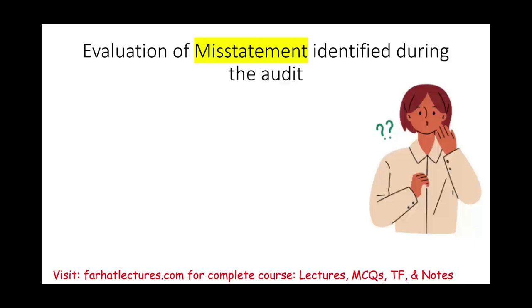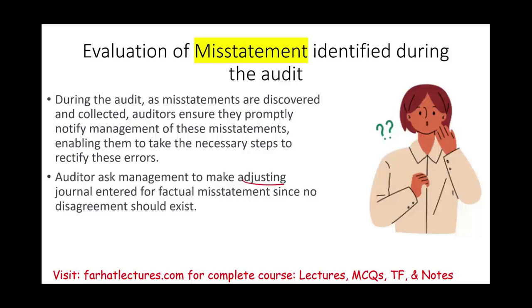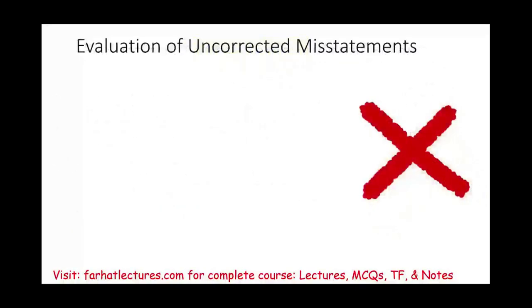Following the adjusting entries, once they fix it, the auditor ought to conduct further audit procedures to verify if any misstatement persists — it could still be some immaterial — but we need to find out if anything persists. So during the audit, we evaluate the misstatement, we look at them, we tell management about them. As we discover them, we collect them and ensure that management is notified to take the necessary steps — make adjusting journal entries to fix those errors, especially for factual misstatements. Judgmental and projected misstatements may or may not be fixed depending on their materiality and the dialogue between us and management.